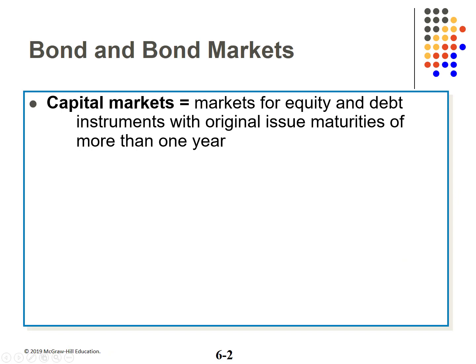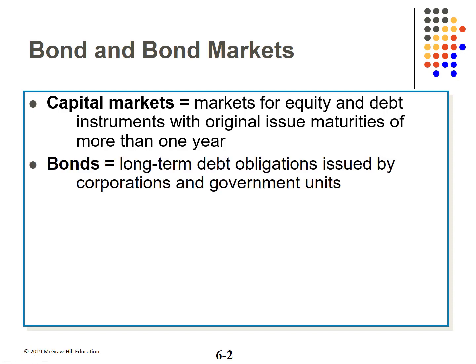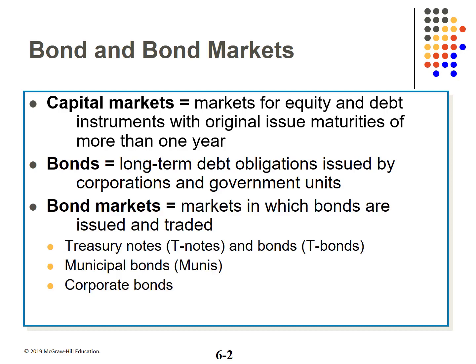In Chapter 5, we talked about money markets — markets for debt securities with maturities of one year or less. Capital markets are markets for both debt and equity with maturities greater than one year. Bonds are long-term debt obligations, issued by both government units and corporations. Bond markets are where bonds trade: treasuries, municipals, and corporate bonds.